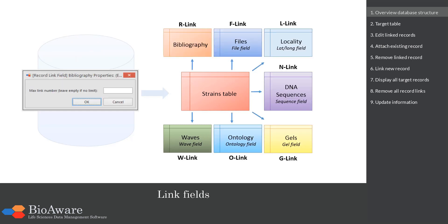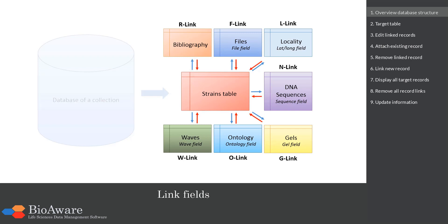For all types of link fields we have the option to give the maximum number of links. For example, when you do not want to link more than one article to a strain, then you set the maximum number to 1. Reverse links can be created automatically. For example, in the strains table you can see the linked bibliography records, but in the bibliography table you can also see the linked strains records.